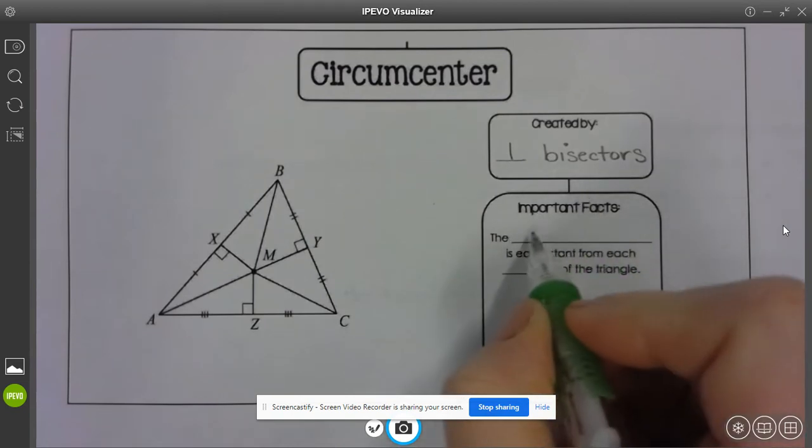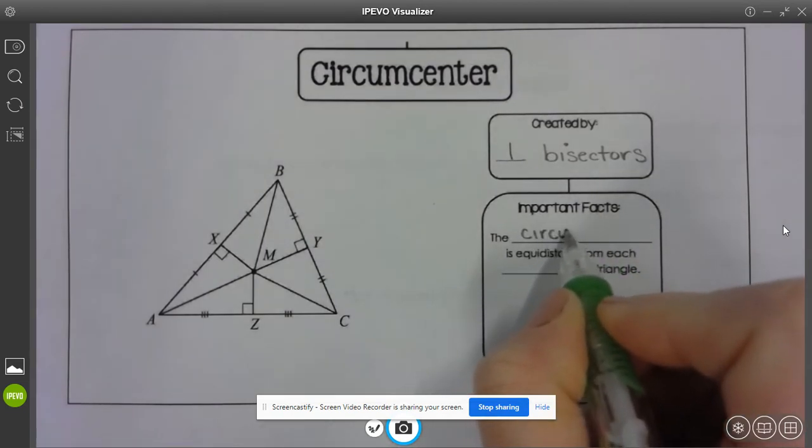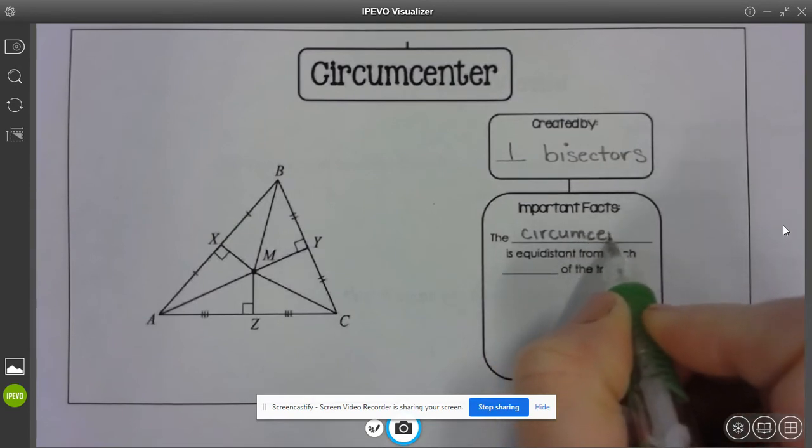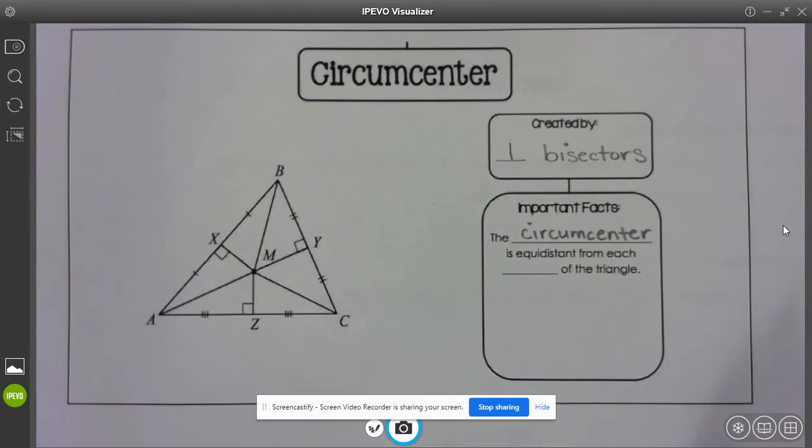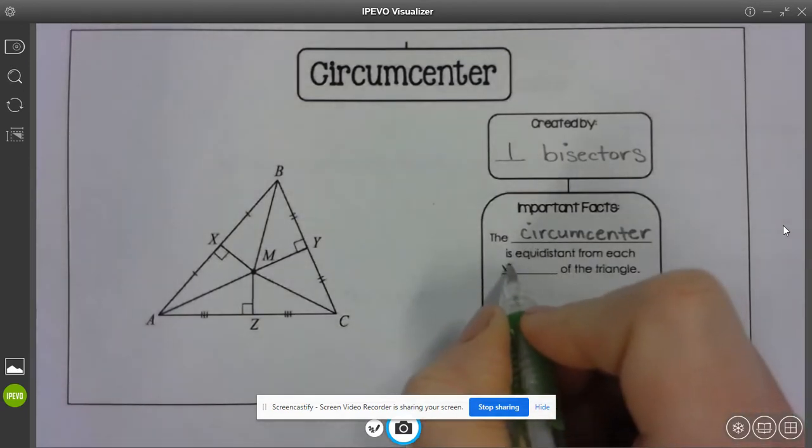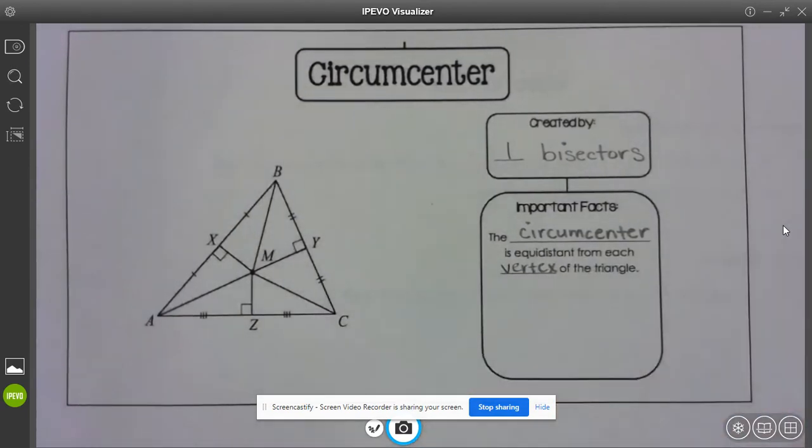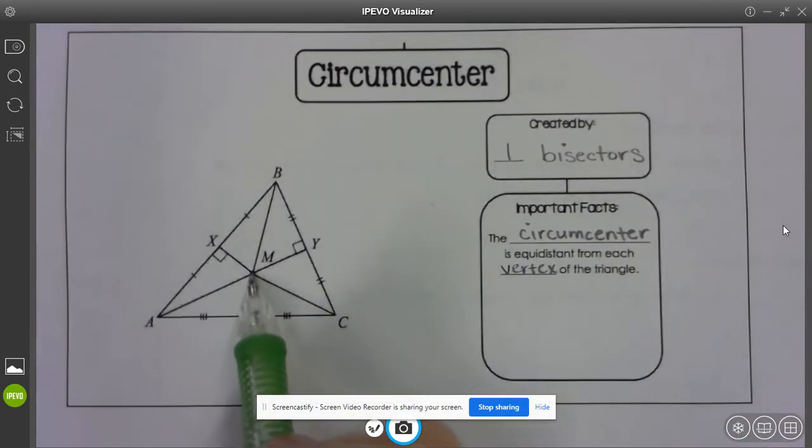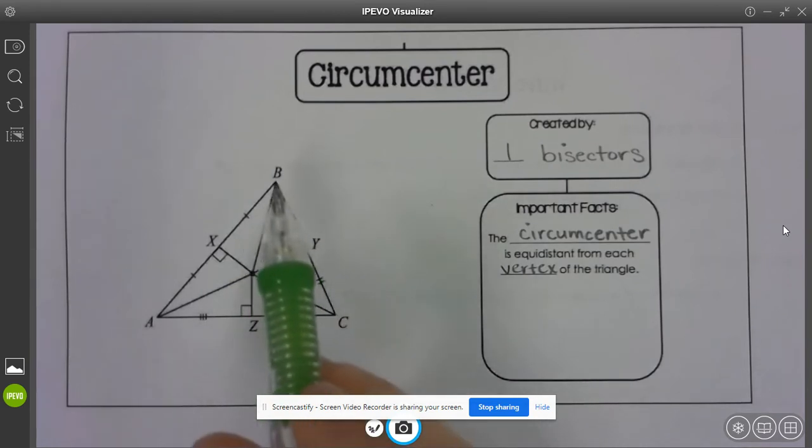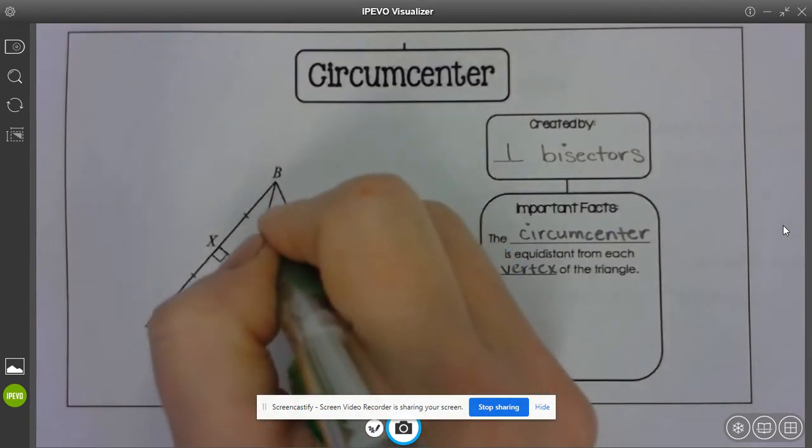So important facts, this is that the circumcenter is equidistant from the vertex of each triangle. So that tells me that M is equidistant from A, C, and B. So let's see, I have one, two, and three tick marks, so I could put, technically I could put four tick marks on those four pieces.